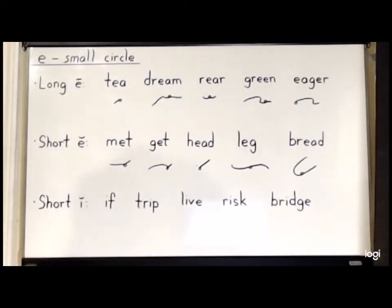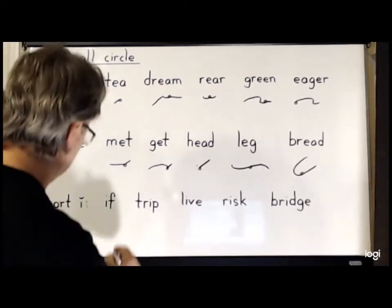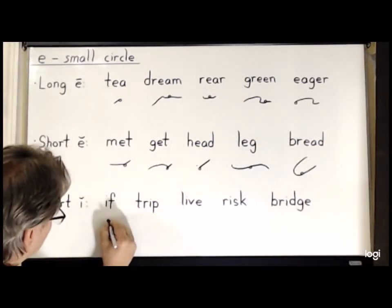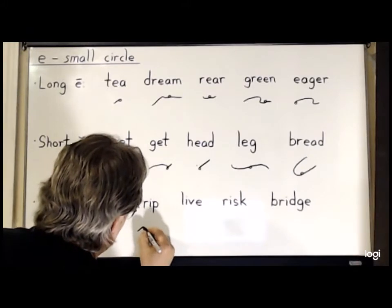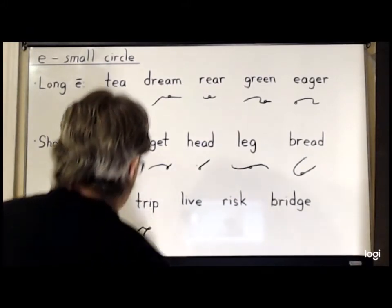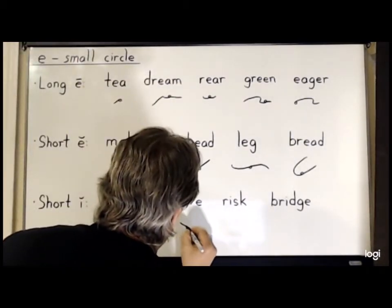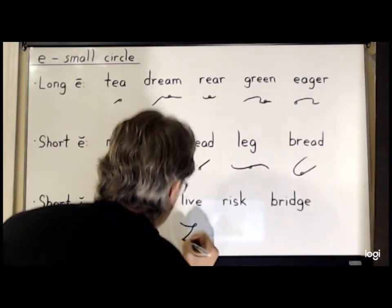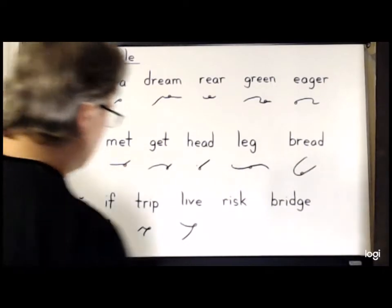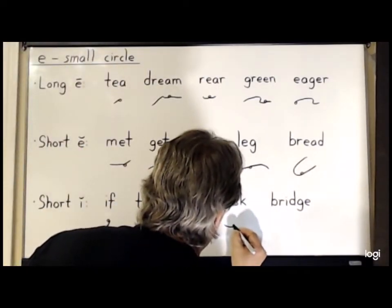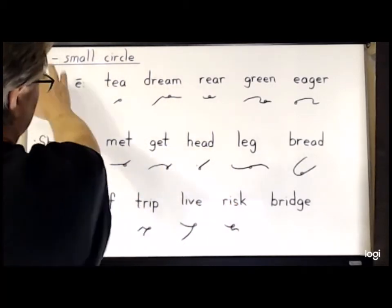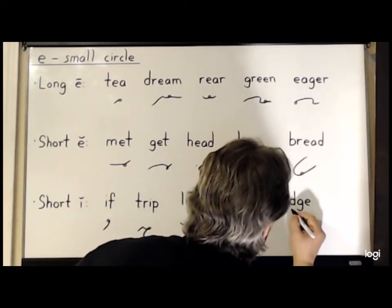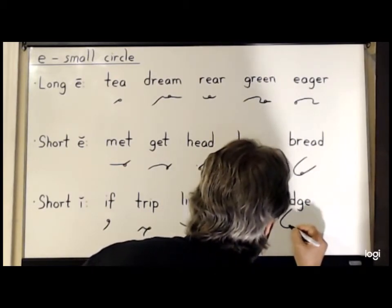Now the small circle E can also stand for the short I sound. So for 'if', it is simply the small circle for the short I and then the F. For 'trip', it's T-R, small circle for the I, P. The word 'live' is L-E-V. For 'risk', it is R-E-S-K. And finally, for the word 'bridge', we will have B-R-E-J.